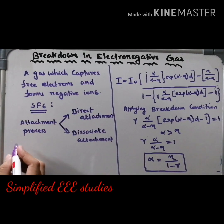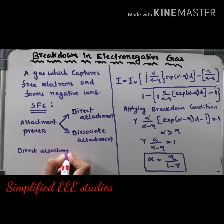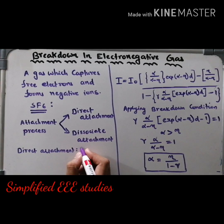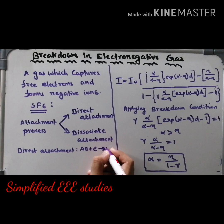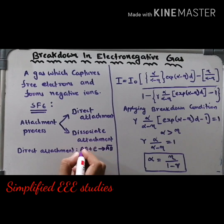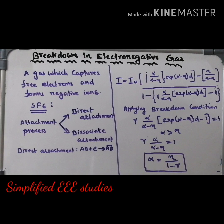Direct attachment process is nothing but electrons directly attaching to form negative ions. You can see the equation — electrons directly combine with the gaseous atom or gaseous molecules and form negative ions. This type of process is known as direct attachment.